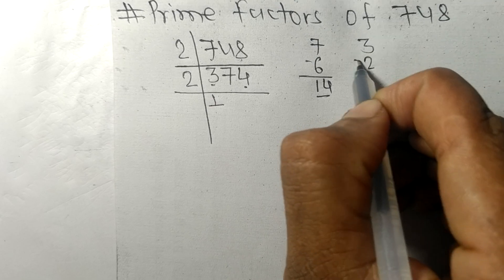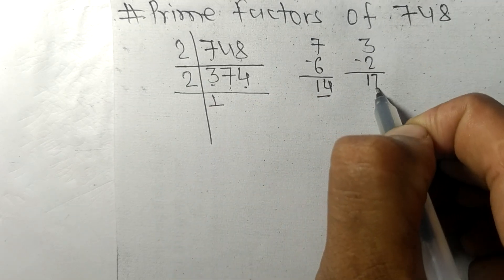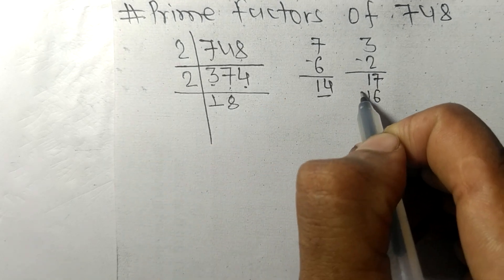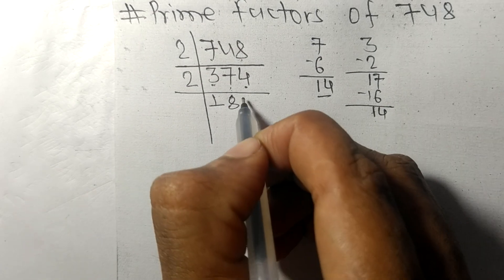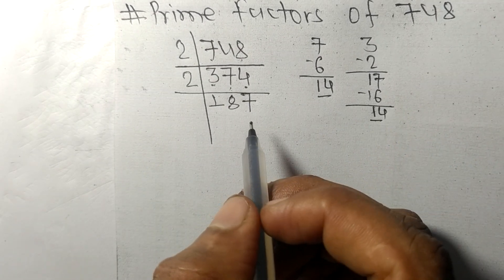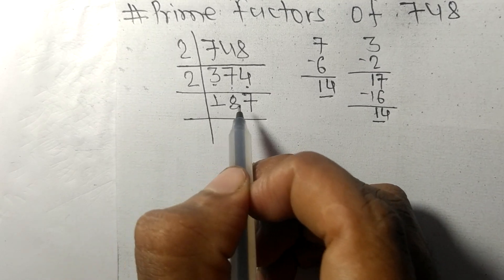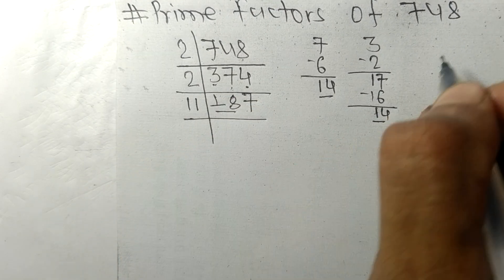...1 equals 2 remainder 1, and 17: 2 times 8 equals 16 remainder 1, and 14: 2 times 7 equals 14. Now we got 187 which is exactly divisible by 11. First we have 18...